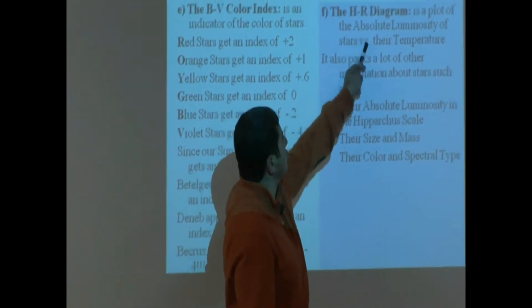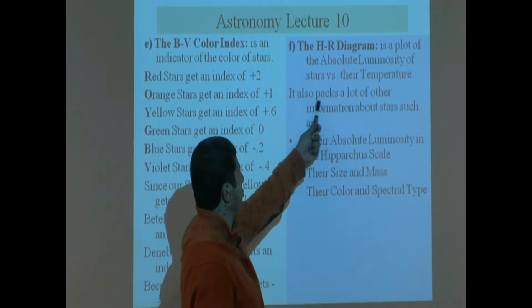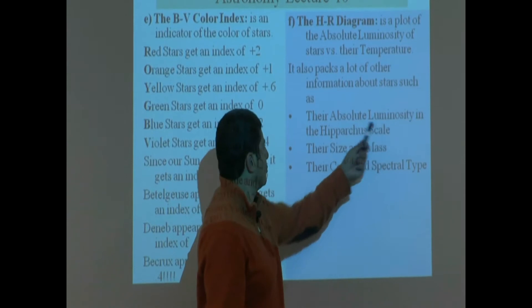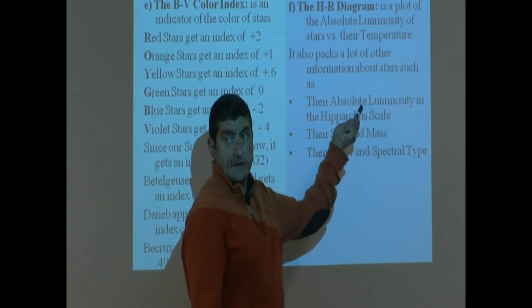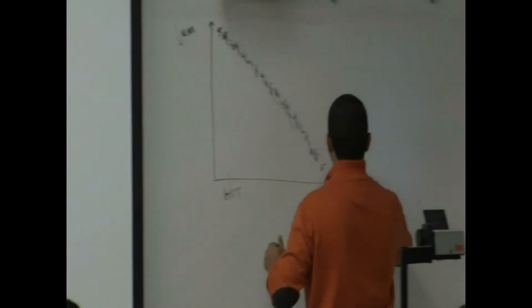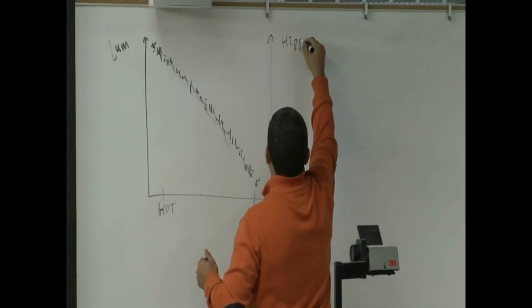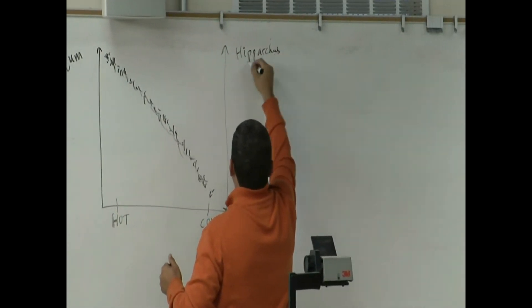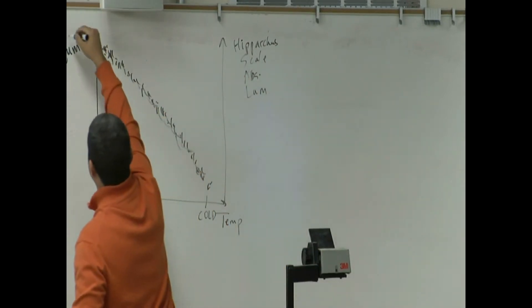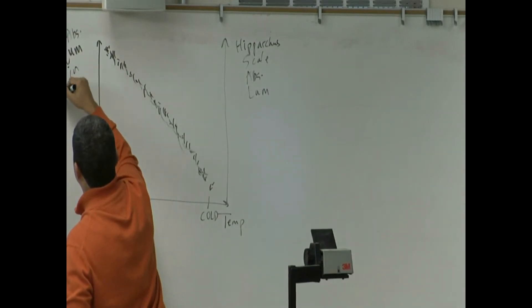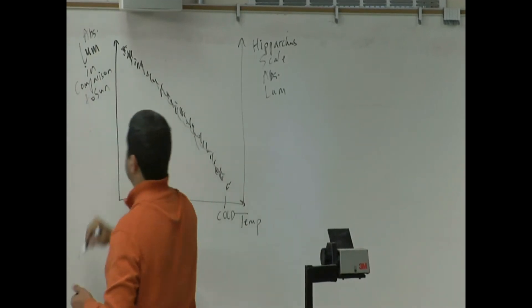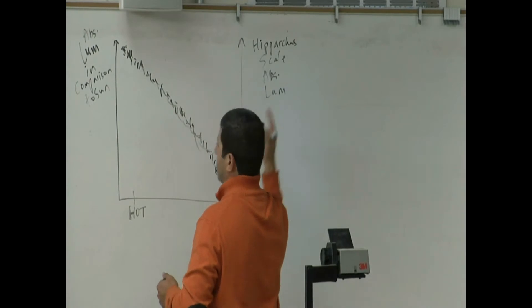We're plotting absolute luminosity of stars versus their temperature. We can also pack a lot of other information in there, such as their absolute luminosity and the Hipparchus scale. On the right side we'll have the Hipparchus scale, absolute luminosity. On the right side is the absolute luminosity in comparison to Sun.